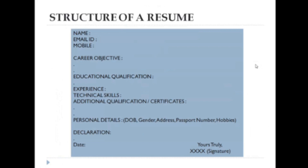Then write your educational qualifications below. Next to it, add your work experience if you have any. If you are a fresher, you can leave that section out — your employer will know you're a fresher when there is no work experience column. Then add your technical and key skills. The key skills you mention must be related to the job you apply for. Additional certifications can also be added, as they show you as a hardworking and active person.